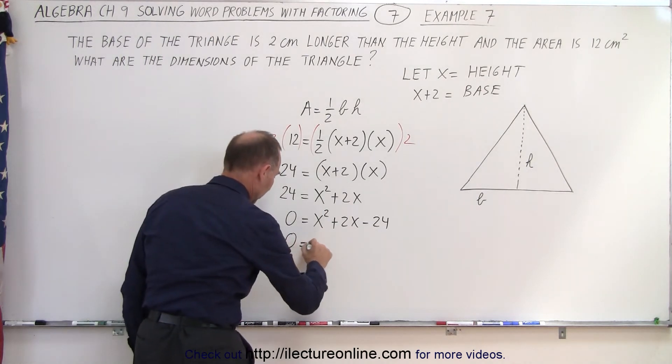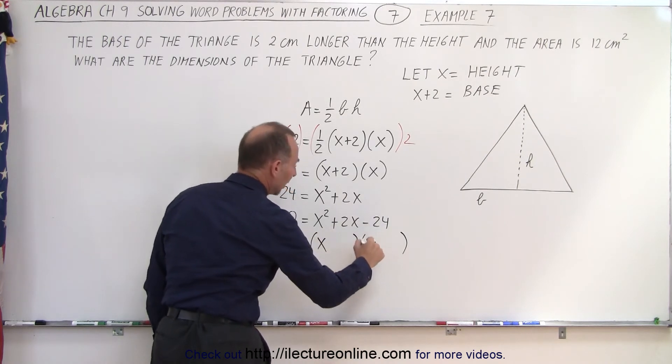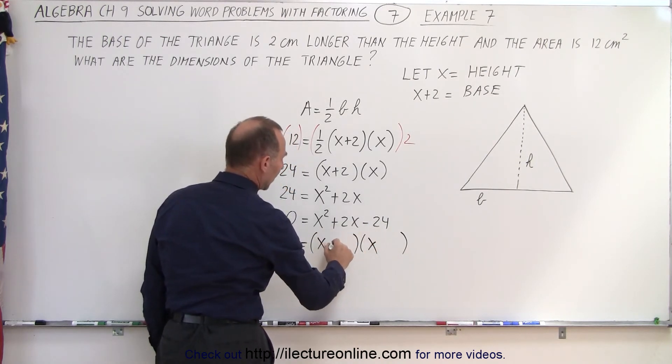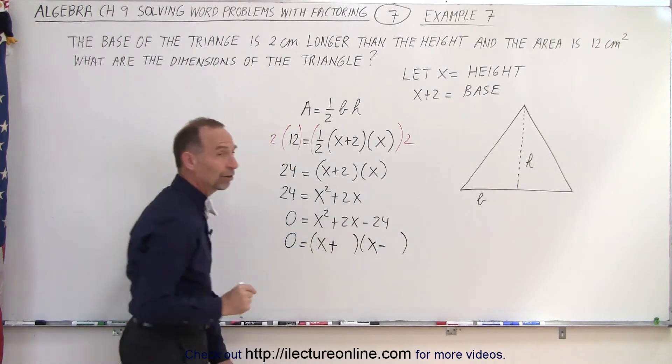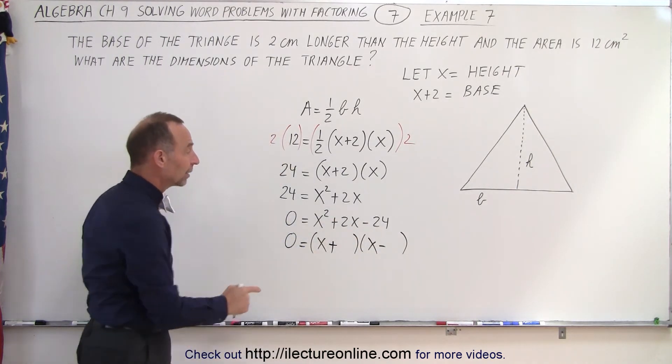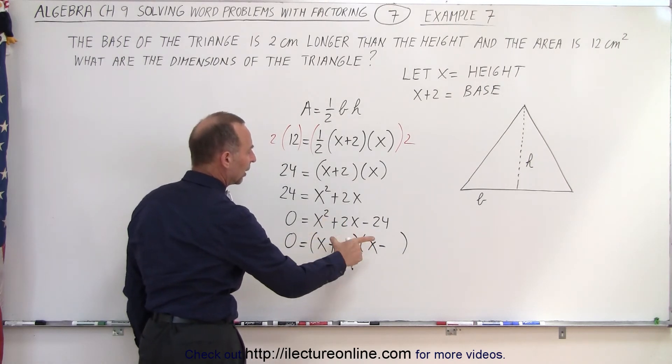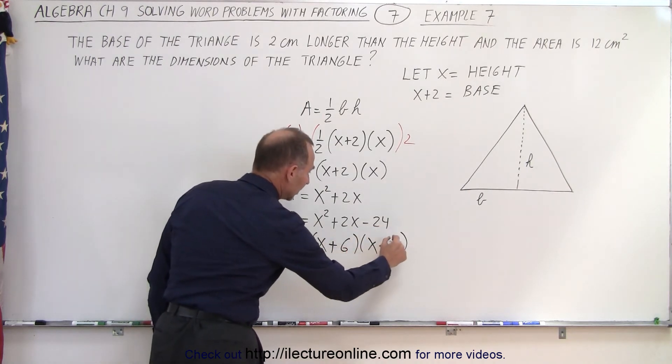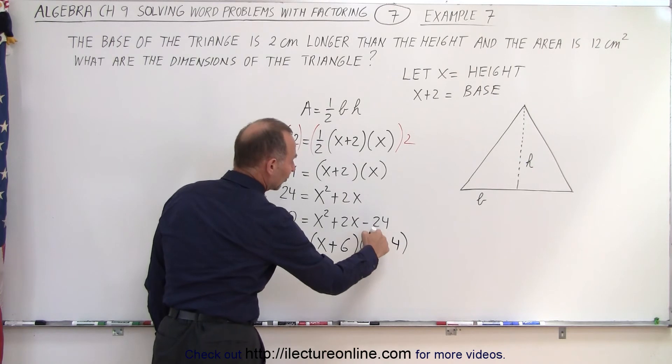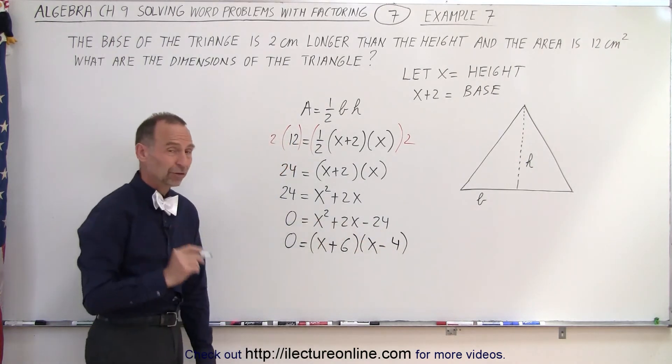So we get 0 equals the product of two binomials. We get x and x. And sign-wise, we must have a positive and a negative because when we multiply, we get a negative 24. When we sum them together, we get a positive 2x. That means the positive number must be 2 bigger than the negative number. 6 and 4 comes to mind because 6 times negative 4 is negative 24, and 6 minus 4 is a positive 2. That looks correct.